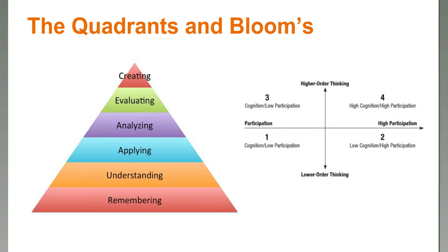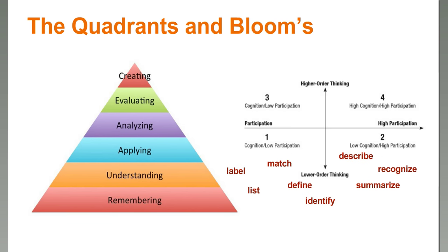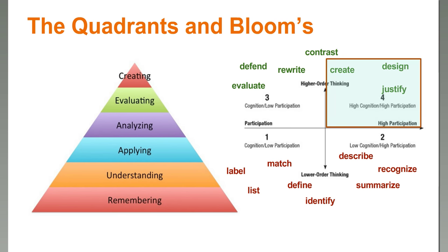Here's the connection between the quadrants and Bloom's taxonomy. On the lower end, you have basic recall skills: describing, labeling, summarizing — necessary when starting with a new concept. But the idea is to build on these and move into defending, evaluating, creating, and analyzing — these higher-order skills. We want to make sure all students are participating in those higher-order activities in quadrant four.